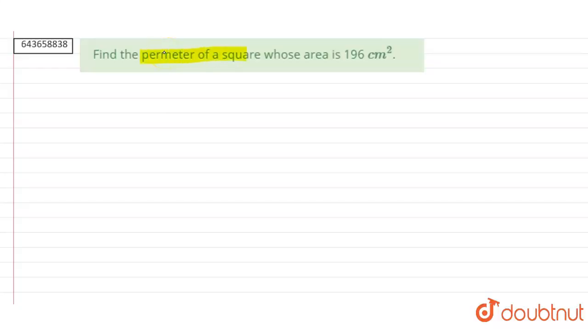The question is: find the perimeter of a square whose area is 196 centimeter square. Area is equals to 196 centimeter square. Let the side of the square be equal to A.